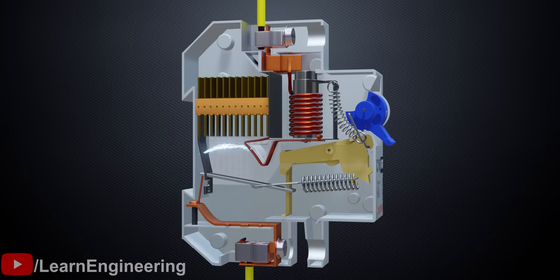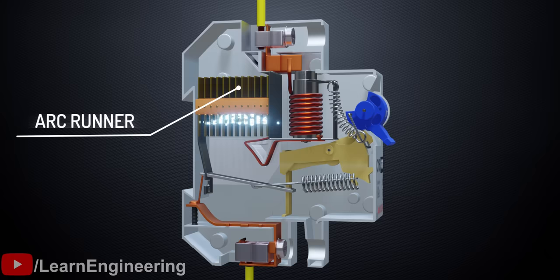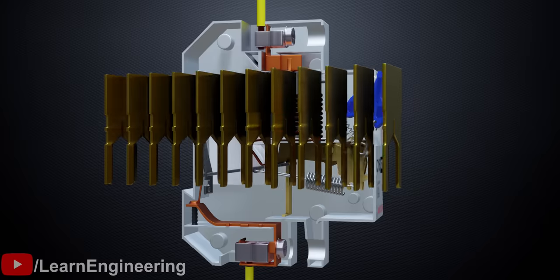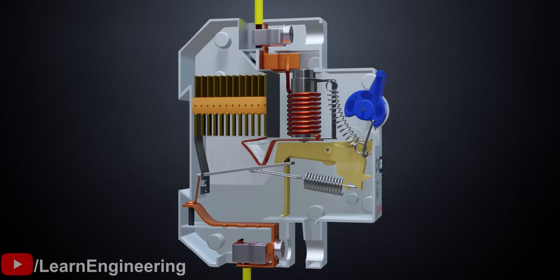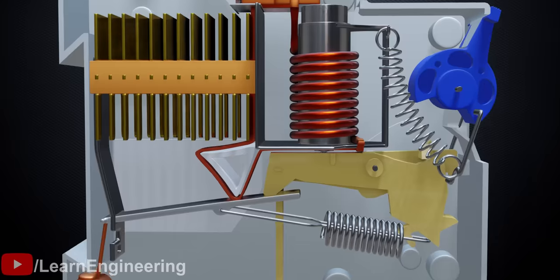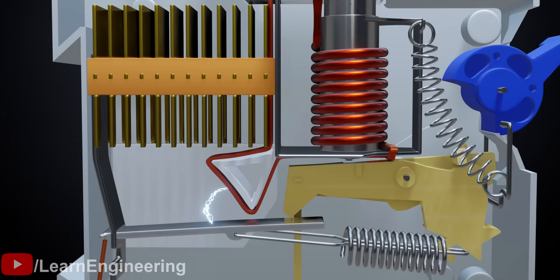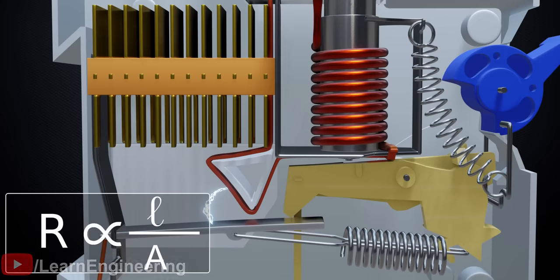To extinguish the arc, a component called an arc runner, or arc chute, is used. The arc chute is an arrangement of parallel plates arranged at small intervals. As the contacts separate, the heavy fault current flowing as an arc triggers a huge temperature rise that can cause damage. Therefore, this arc should be killed.